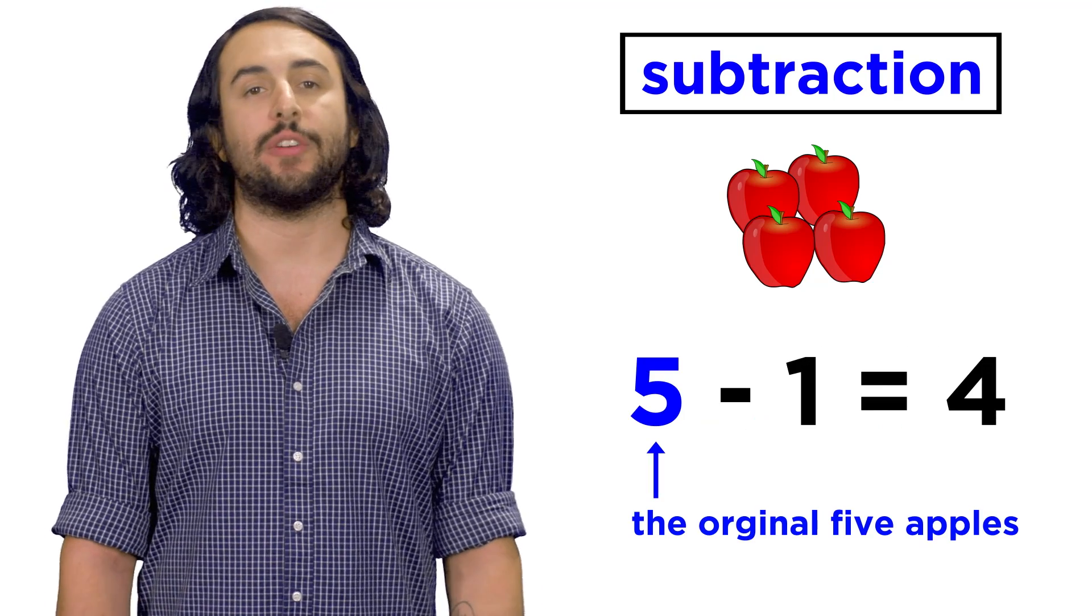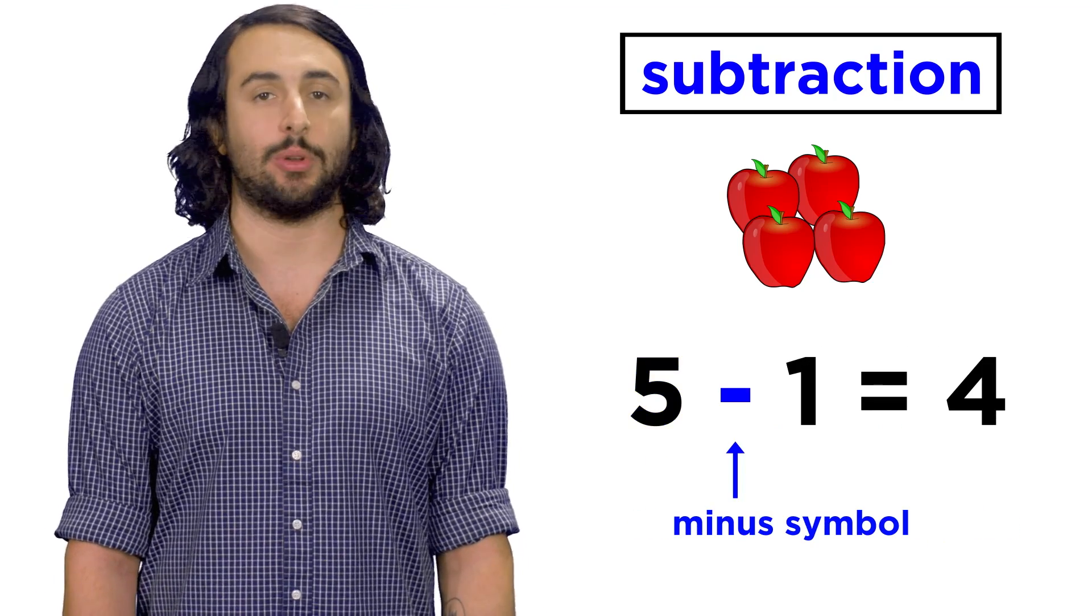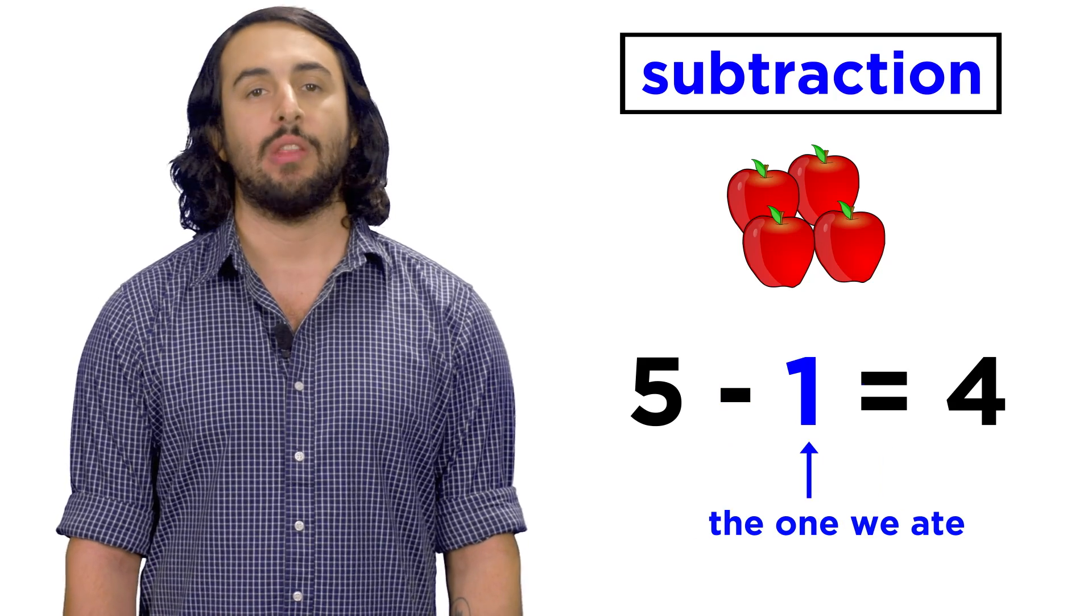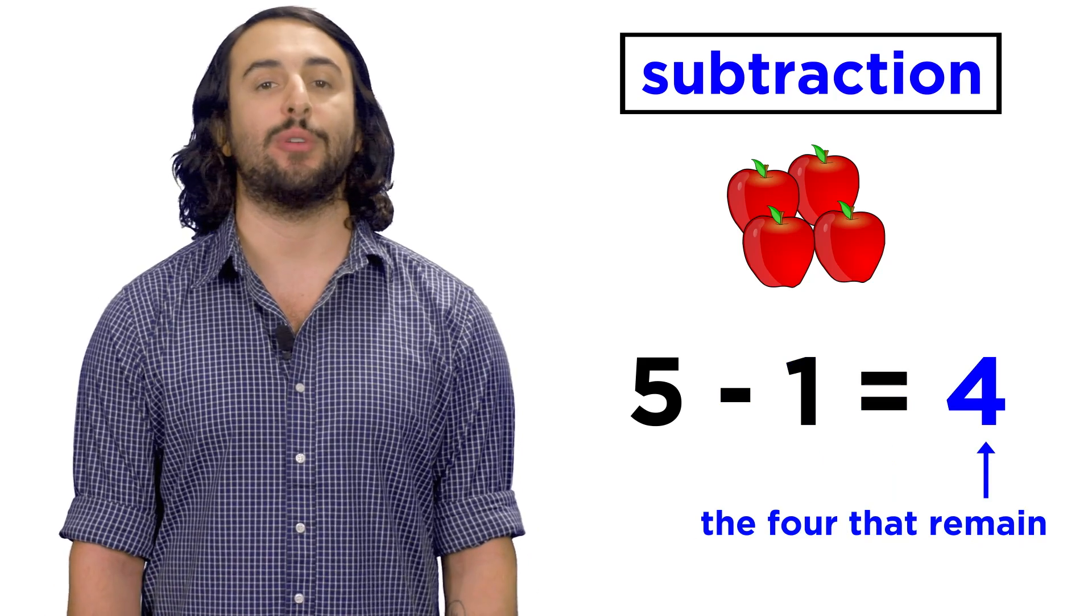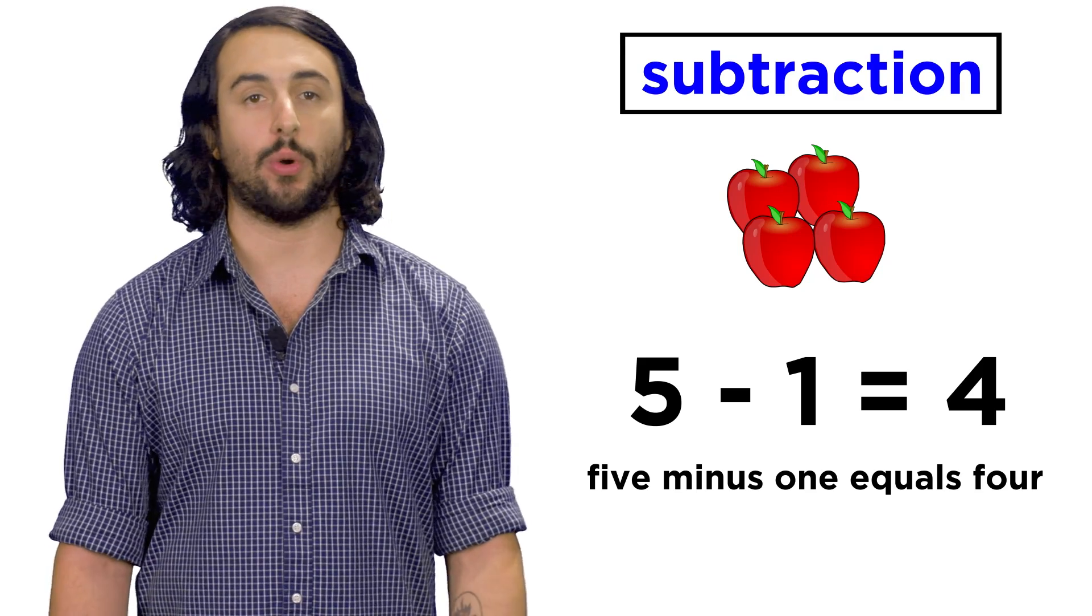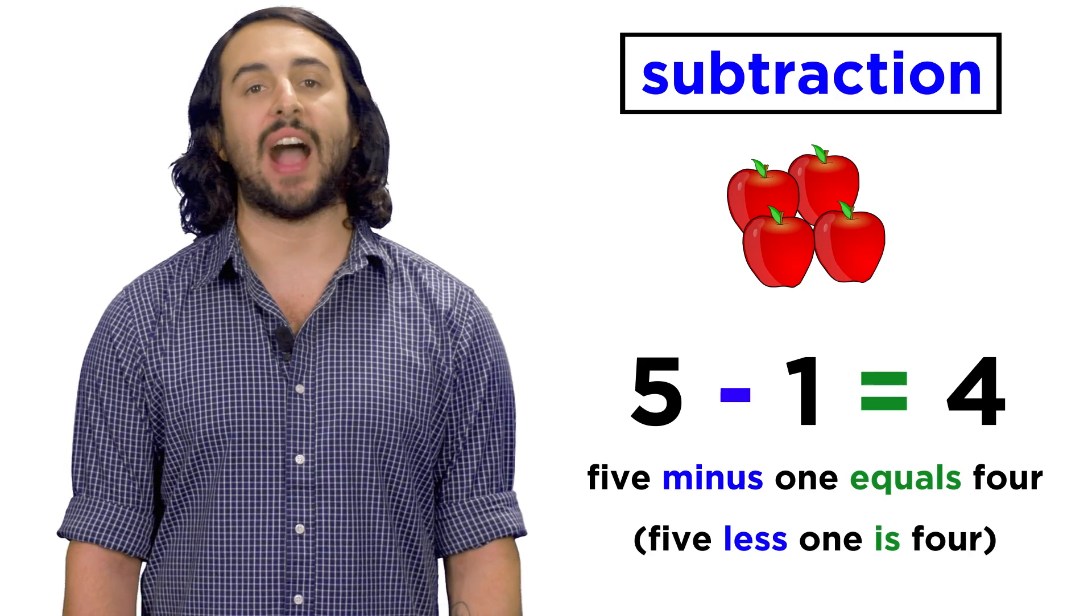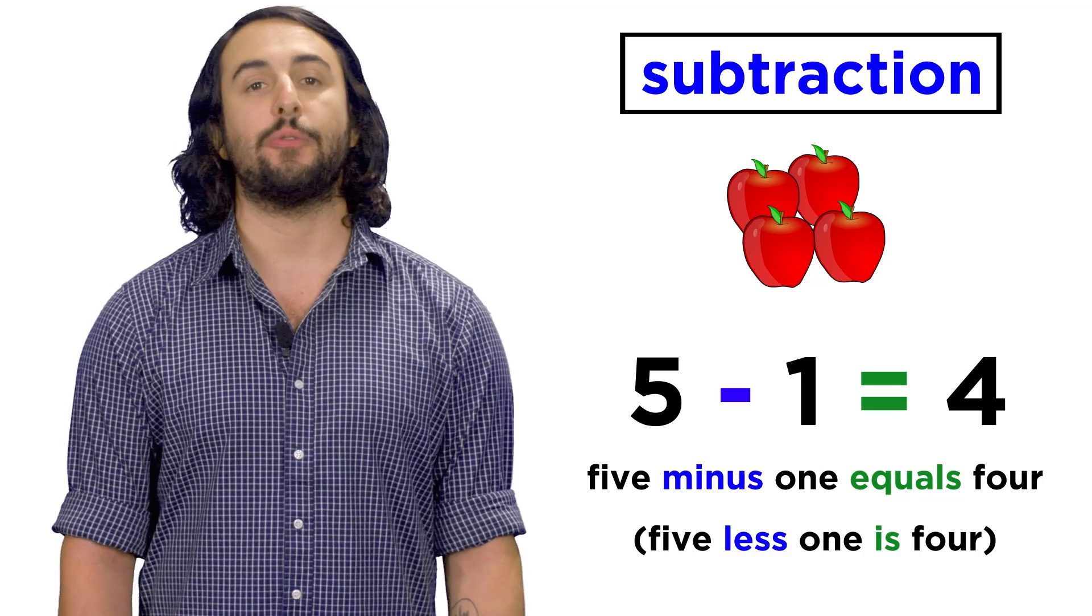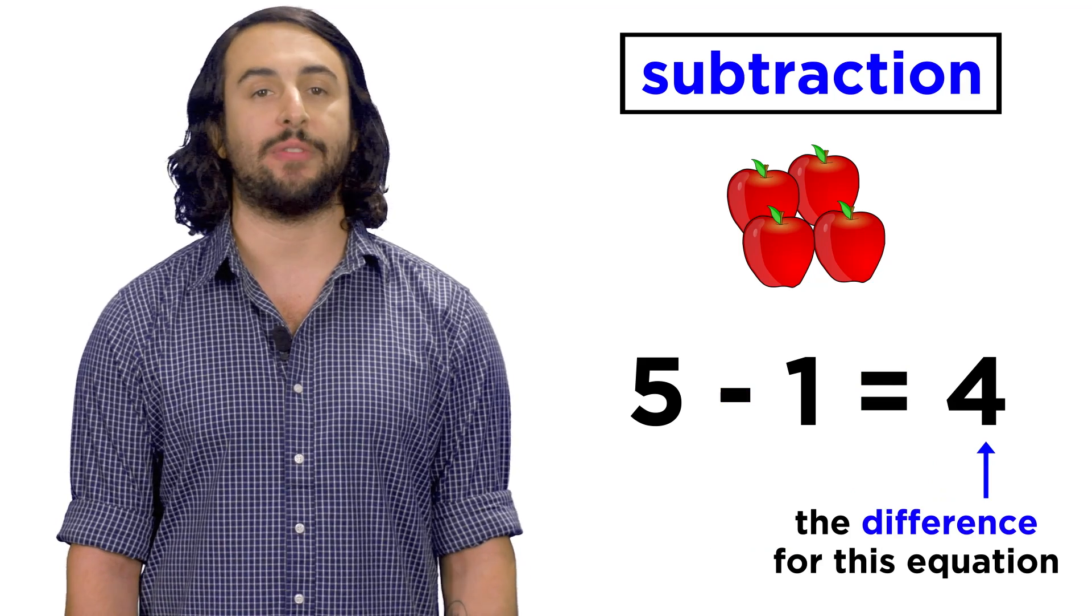We can write another equation with a five, then the minus symbol, followed by a one, then the equals sign, and the number four. This reads five minus one equals four, which essentially means five less one is four, so four is the difference between one and five.